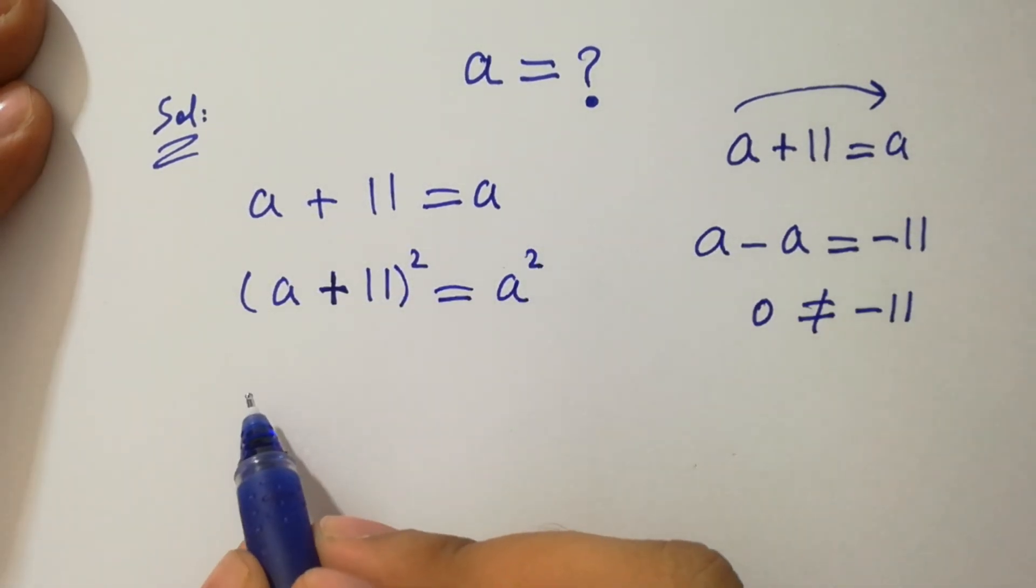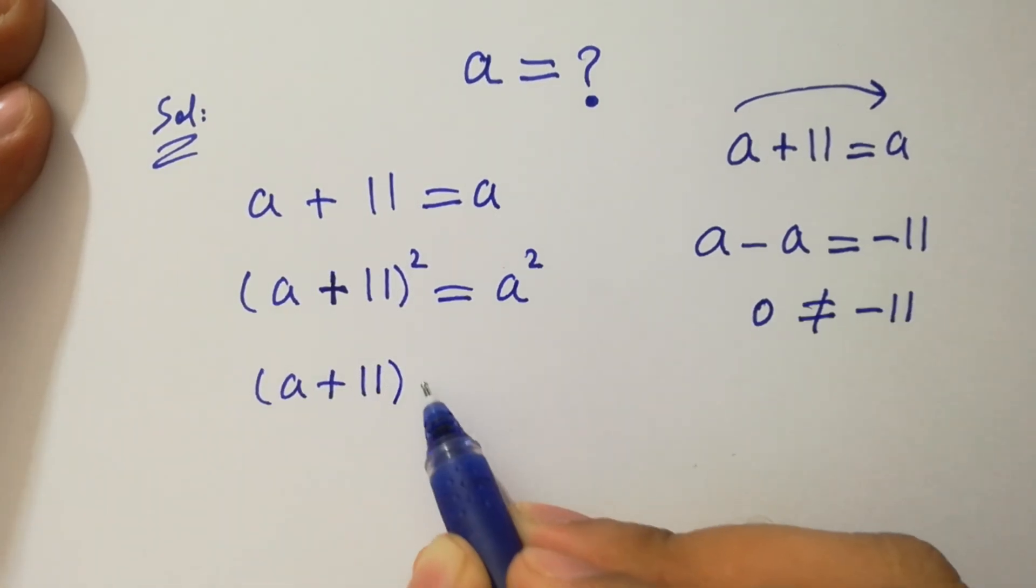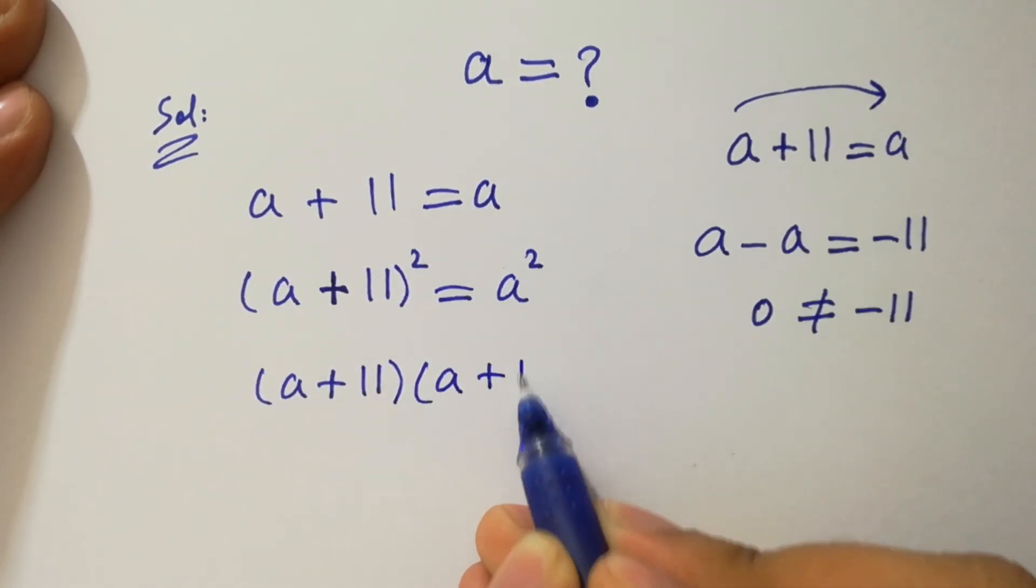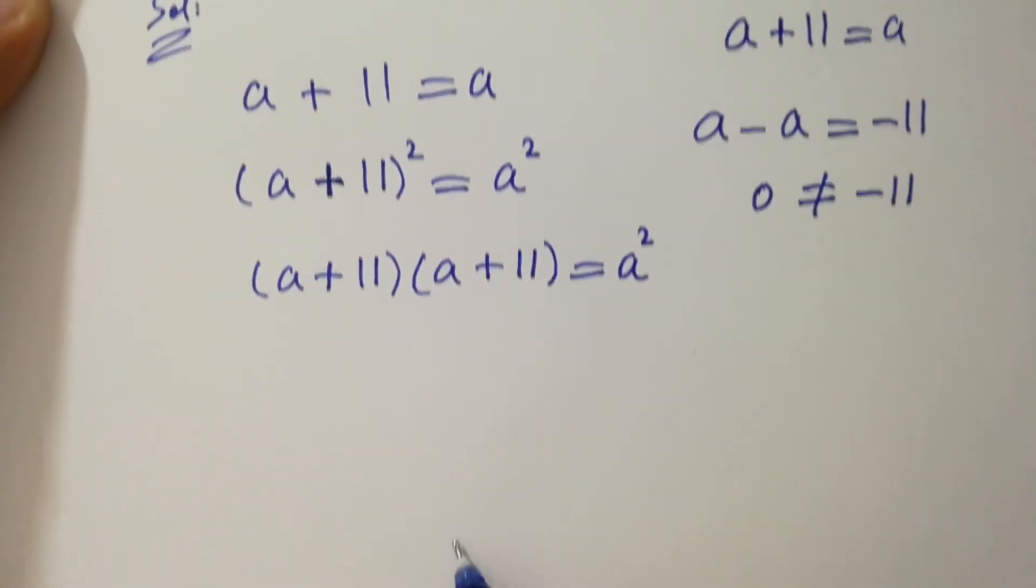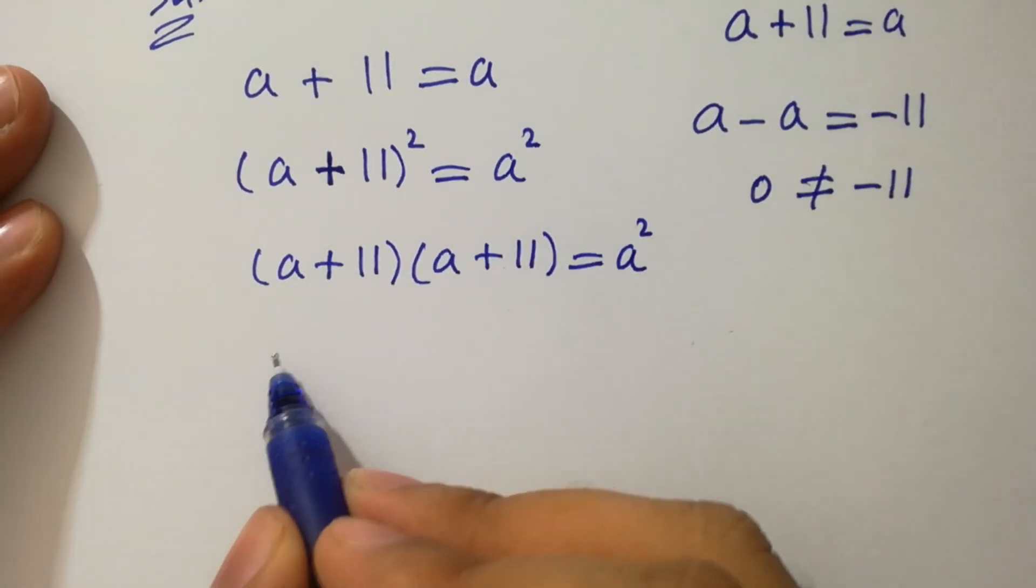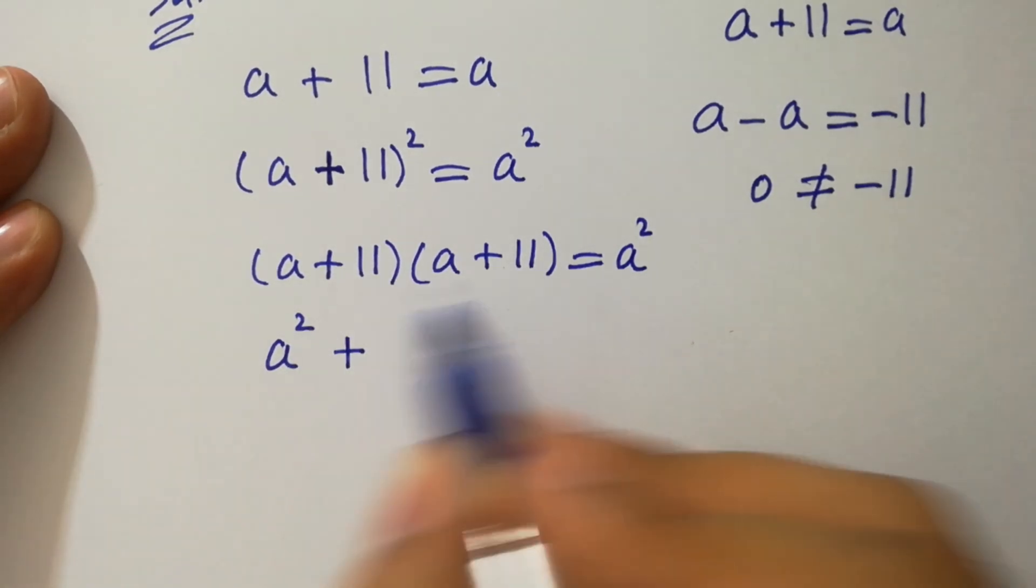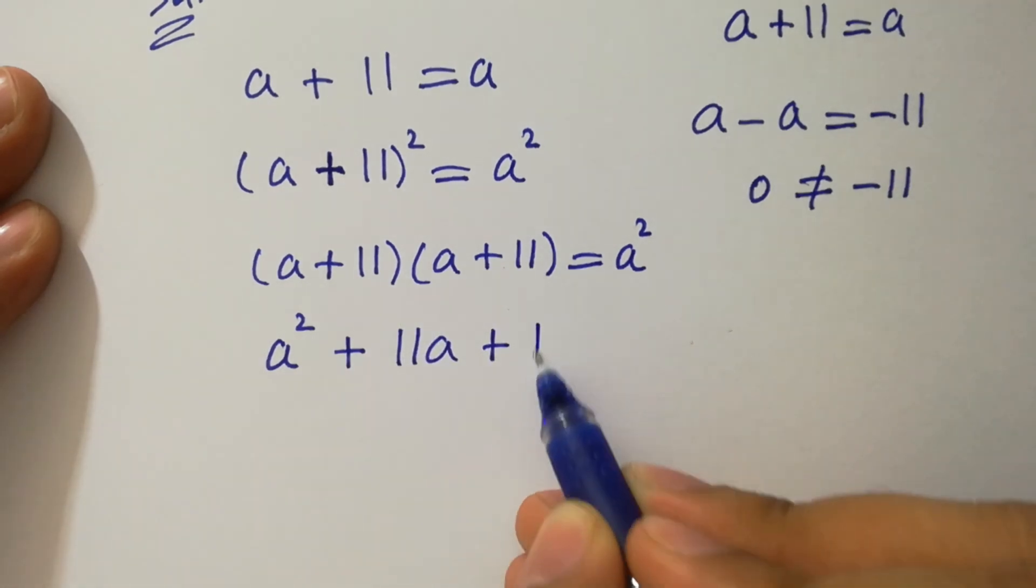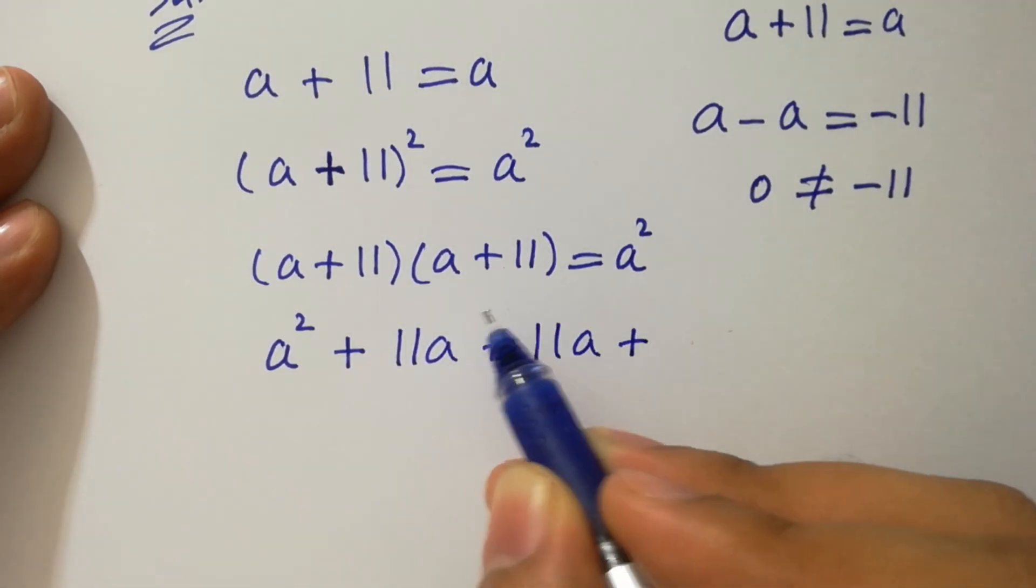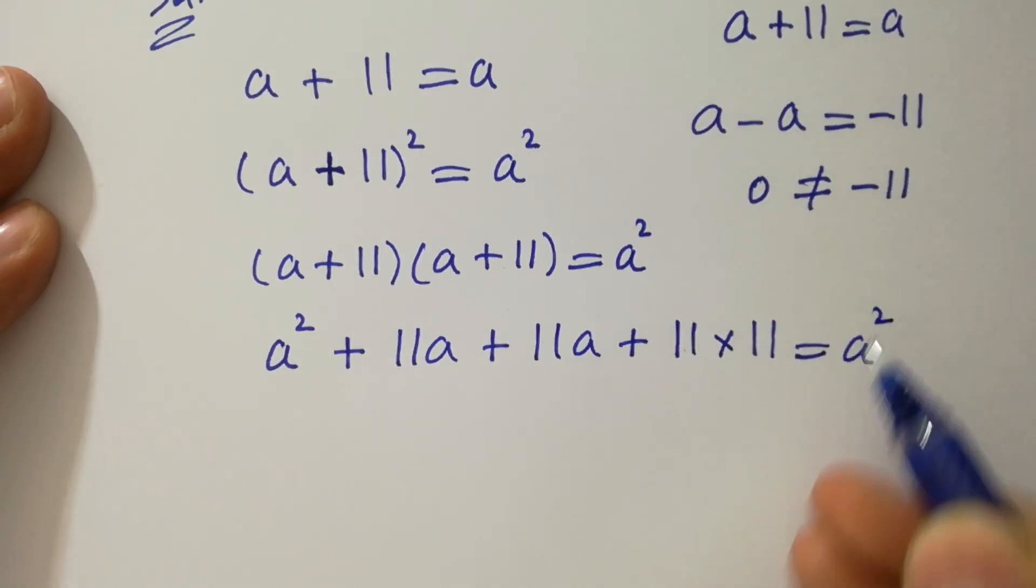Which is same as a plus 11 times a plus 11 equal to a square. Simplify this: a times a, a square plus 11a plus 11a plus 11 times 11 equal to a square.